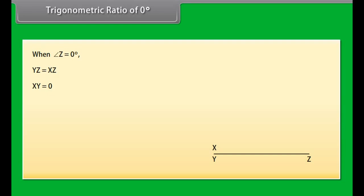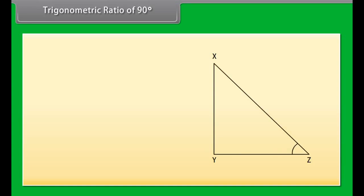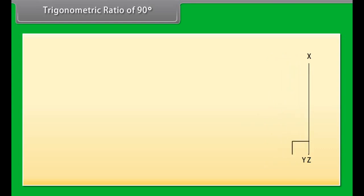Trigonometric ratio of 0 degrees. Consider the right-angled triangle XYZ. As the measure of angle Z is reduced slowly, XZ rotates left and becomes flatter. When angle Z is reduced to 0°, XZ merges with YZ and the length of XY becomes 0. Therefore: sin 0° = XY/XZ = 0/XZ = 0. Cos 0° = YZ/XZ = 1, since YZ = XZ. Tan 0° = XY/YZ = 0/YZ = 0.